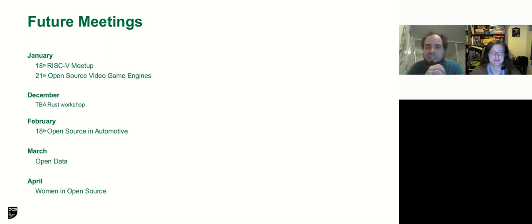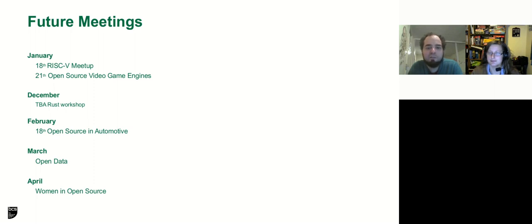Before we get started with today's meeting and four interesting talks about education, we wanted to quickly indicate the future meetings. On January the 18th there will be a RISC-V meetup, held quarterly. On the 21st there will be an open source video game engines meeting. In December there will be a Rust workshop — the exact date will be announced shortly — which will be a half-day workshop. On February the 18th we will have open source in automotive. In March, the exact date to be defined, open data. And in April we have women in open source.